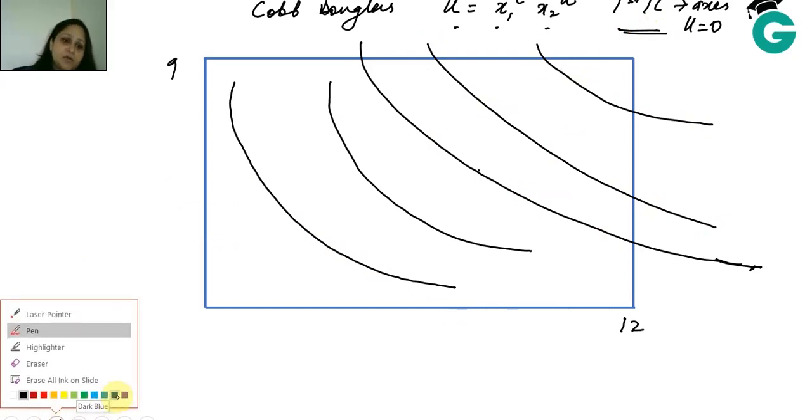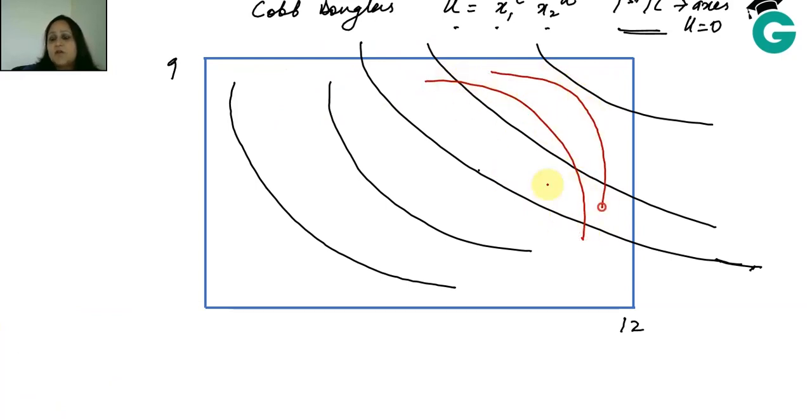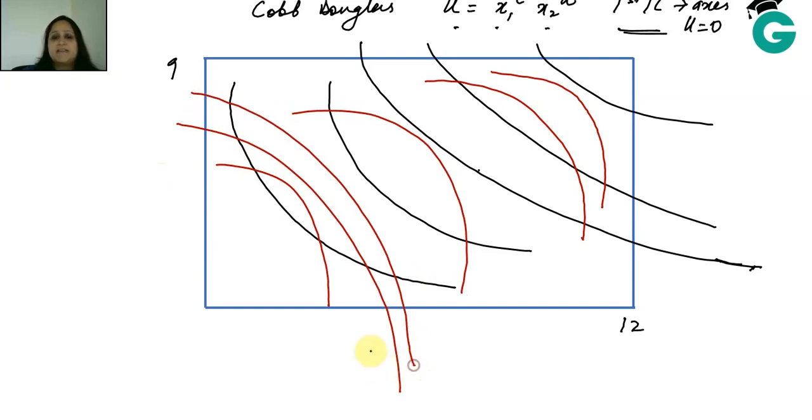Similarly, if we see B, B's ICs will not touch B's axis. B's axis is this and this. So B's ICs will be like this, multiple ICs drawn without touching B's axis. But B's ICs can touch A's axis, but not B's axis. These are our variety of ICs for A and B. Any point will have two coordinates: one coordinate for A and one coordinate for B.